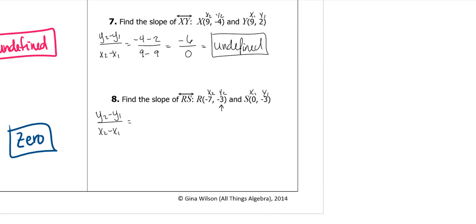My y2 is negative 3 minus my y1, which is negative 3. My x2 is negative 7 minus my x1, which is 0. Minus a negative is plus, which gives me a 0 on top. Negative 7 minus 0 is negative 7. But 0 divided by anything is just 0.